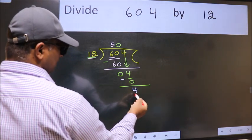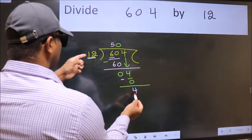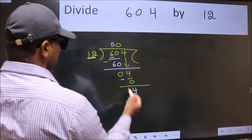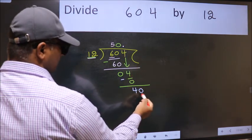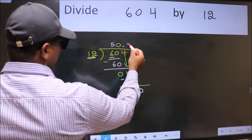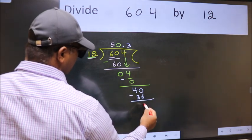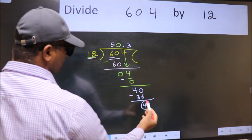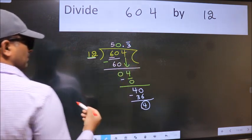Over here we did not bring any number down, and 4 is smaller than 12. So now we can put dot and take 0. So 40. A number close to 40 in 12 table is? 12 threes, 36. Now we subtract. We got 4 again. That means we get bar on this number.